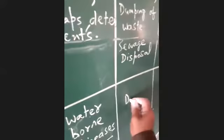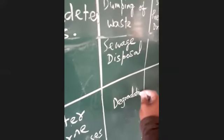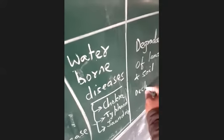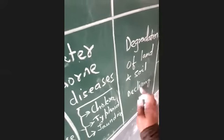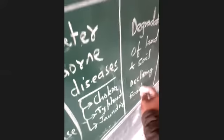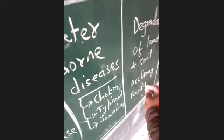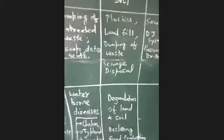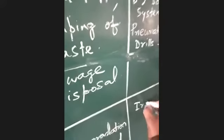Effects of land and soil pollution is degradation. Simply degradation, it leads to degradation, degradation of land and soil, declining food production.